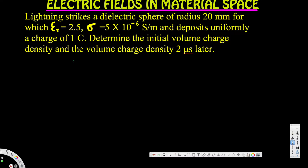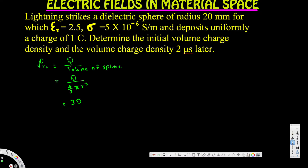First, we are going to find the initial volume charge density, given by rho_v0. We can calculate that by dividing the charge by the volume of the sphere. The charge given is one coulomb. Before plugging in values, let's derive an equation: Q divided by the volume of the sphere (4/3 pi r cubed). The three flips to the top, giving us 3Q divided by four pi r cubed.